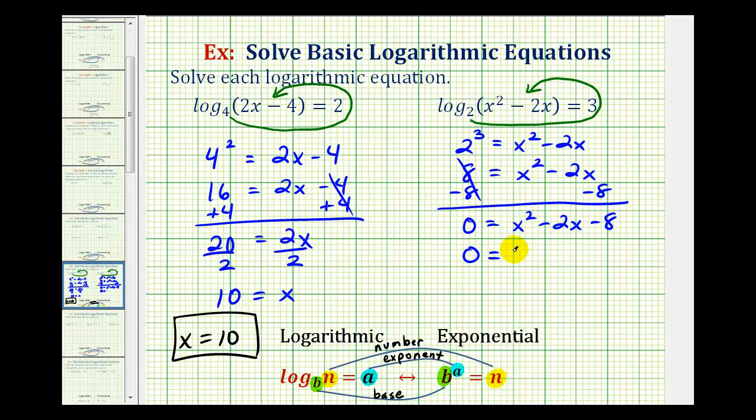Looks like this will factor. Factors of x squared are x and x. The factors of negative eight that add to negative two would be negative four and positive two. So the values of x that make this product equal to zero would be x equals four from this factor or x equals negative two from this factor. So for this equation, we have two solutions.